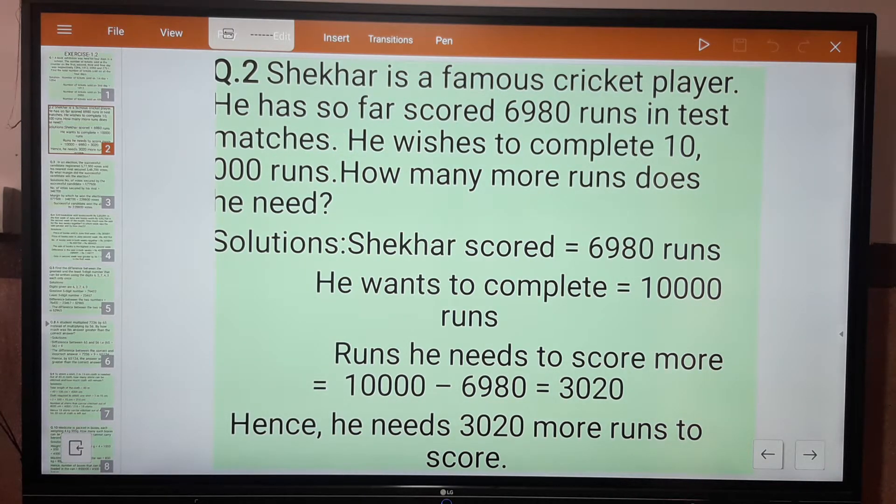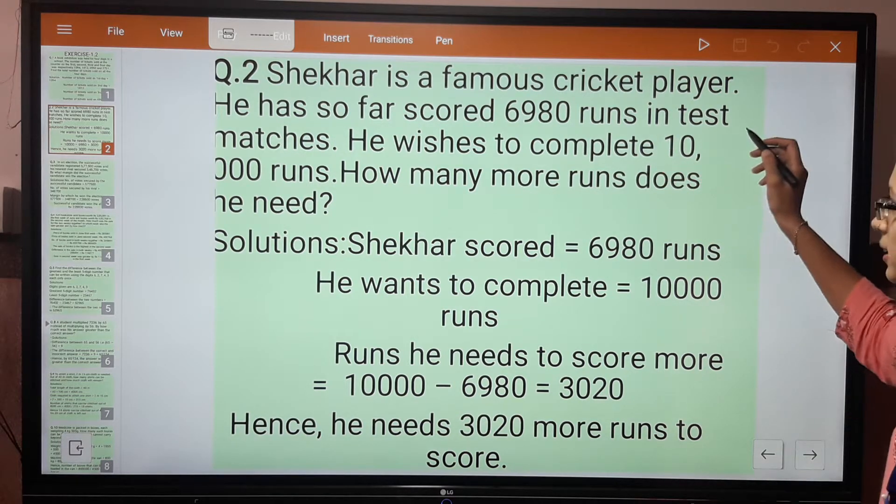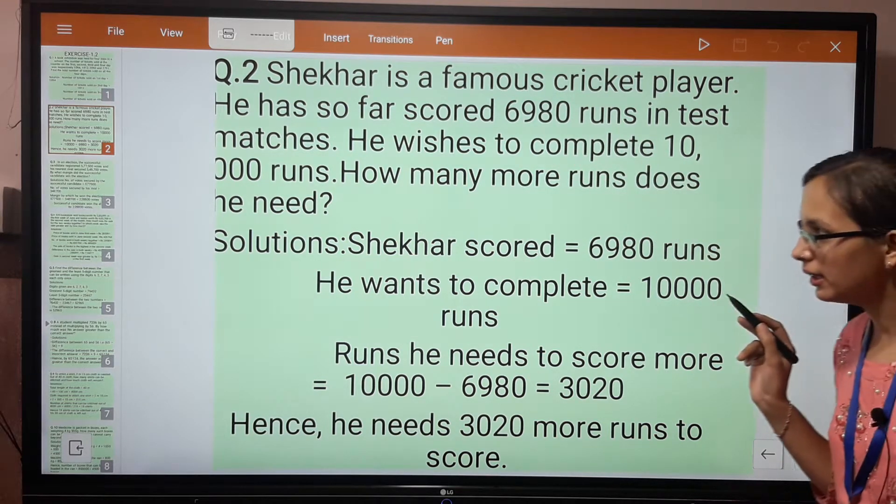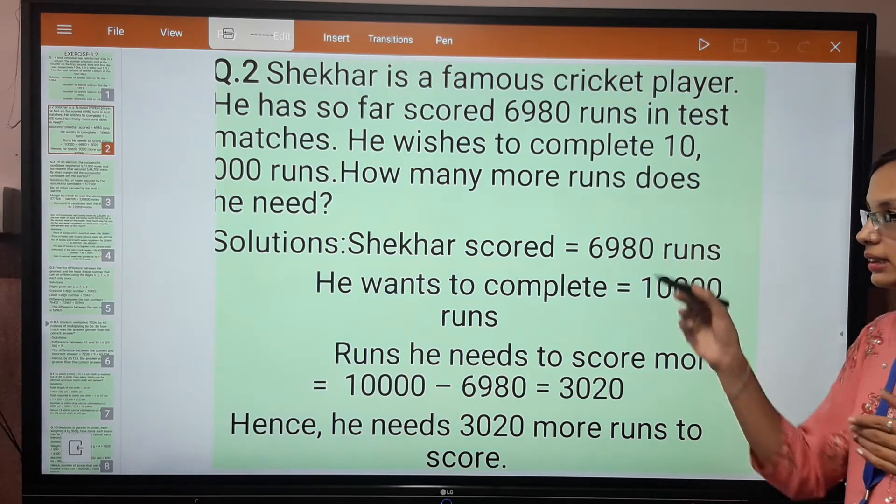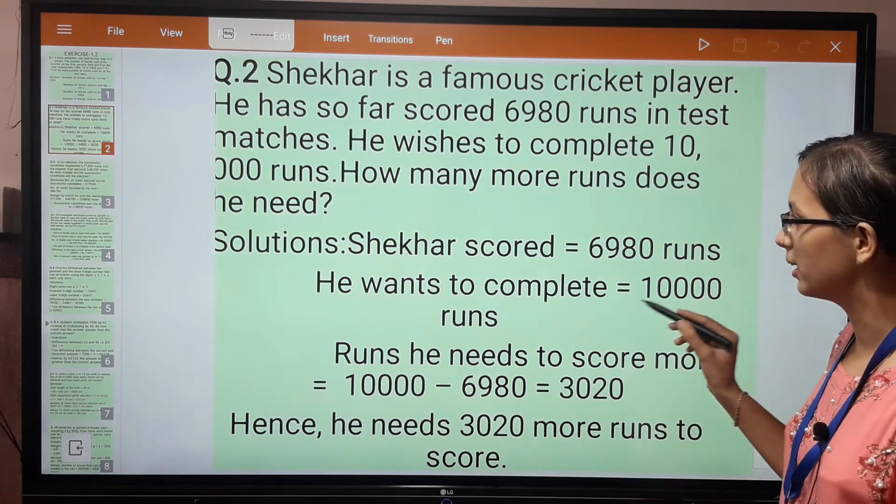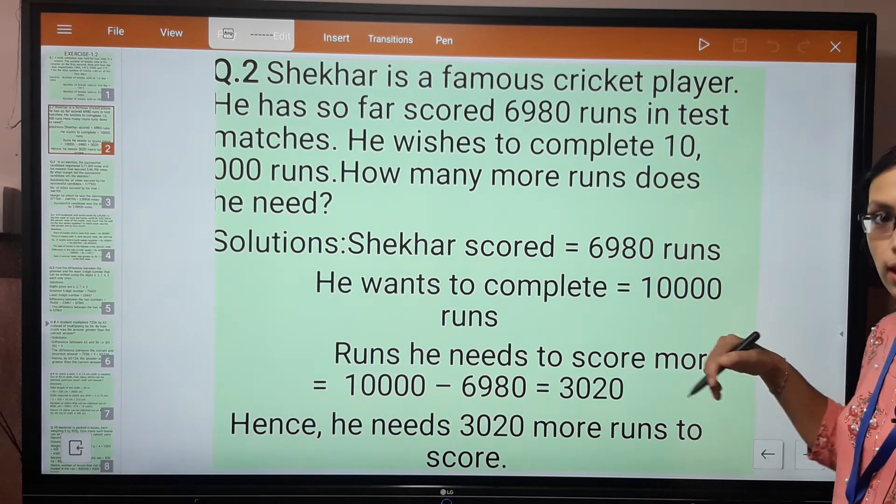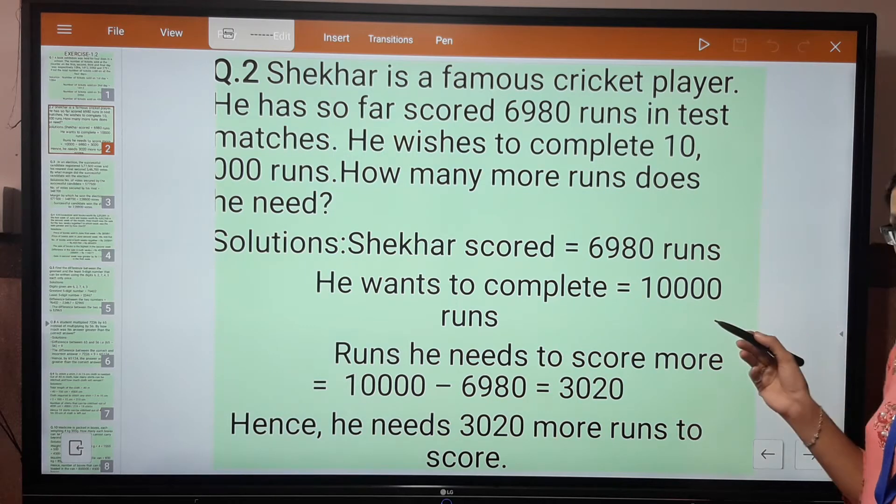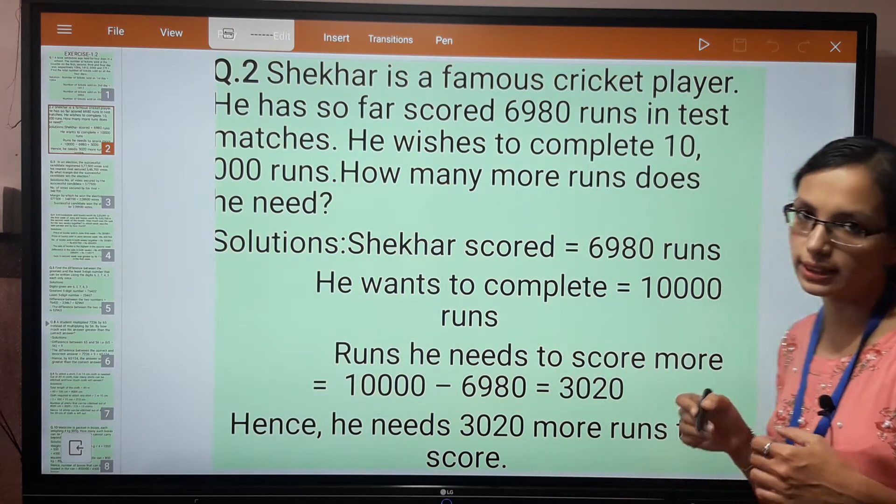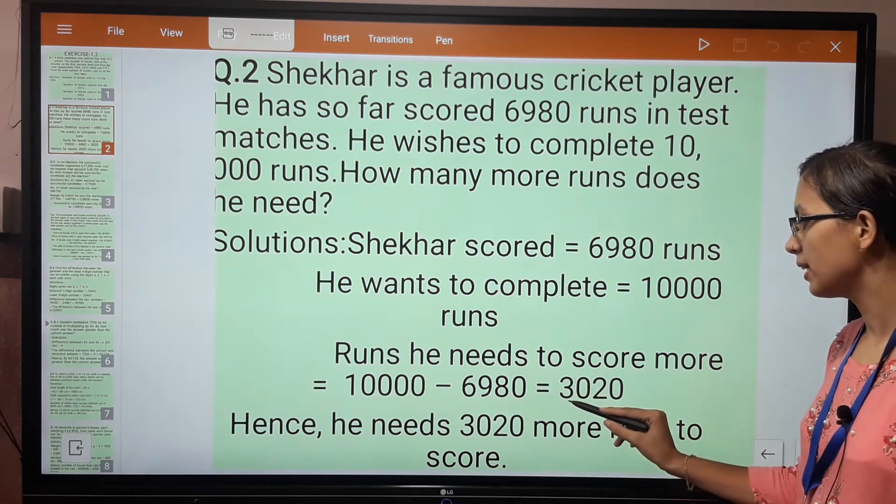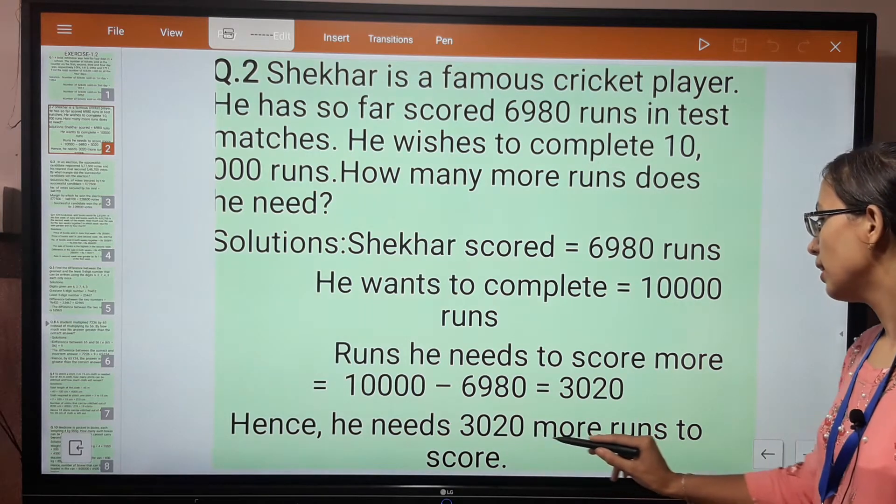Question number 2: Shekhar is a famous cricket player. He has so far scored 6980 runs in test matches. He wishes to complete 10,000 runs. How many more runs does he need? Solution: Shekhar scored 6980 runs. He wants to complete 10,000 runs. Runs he needs to score more equals 10,000 minus 6980, which equals 3020. Hence, he needs 3020 more runs to score.